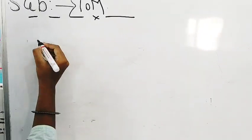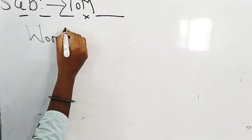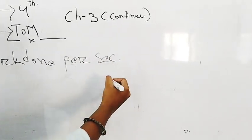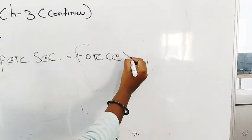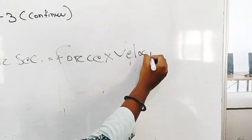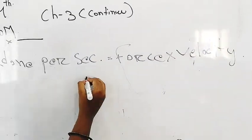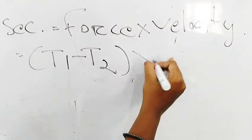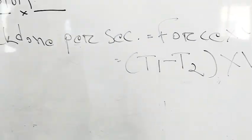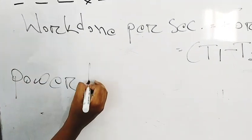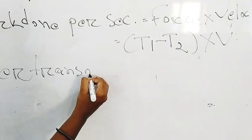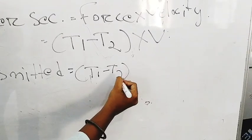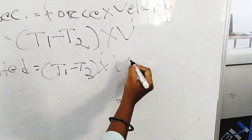So the next one is work done per second is equal to force into velocity, force into velocity. Means force is equal to T1 minus T2, effective driving force into V is equal to velocity. So then power transmitted, power transmitted is equal to T1 minus T2 into V watts.